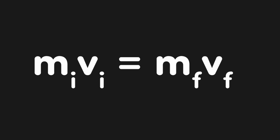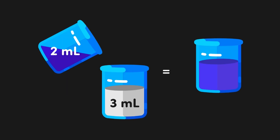I always think of m1v1 equals m2v2 as m-initial times v-initial equals m-final times v-final, since it reminds me that the ending volume is the one that counts, not the volumes of the two solutions being mixed together. For example, if a 2 mL concentrated stock solution was diluted with 3 mL of buffer, the initial volume is 2 mL and the final volume is 5 mL, since that would be the volume of the buffer plus the stock solution.